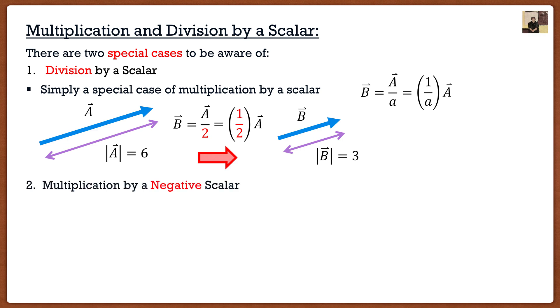Now the second special case is multiplication by a negative scalar. Alright. Negative scalar. Thus far, we've only dealt with positives. What happens if we throw in a negative just for fun? Well, it's actually just as simple. Negative scalars just flip the direction of a vector. That's it. That's all.